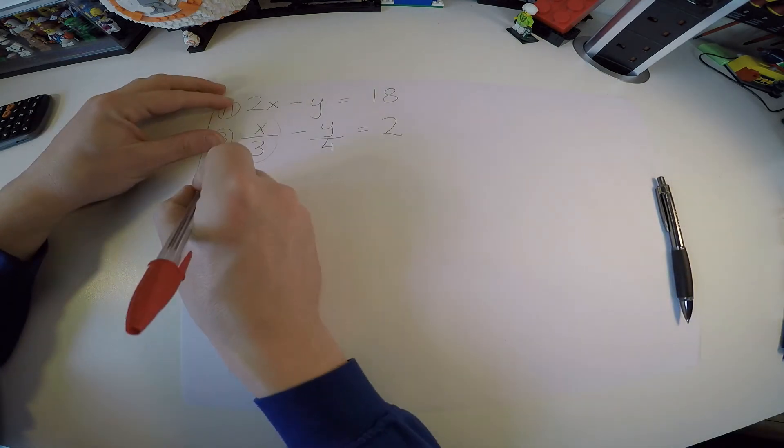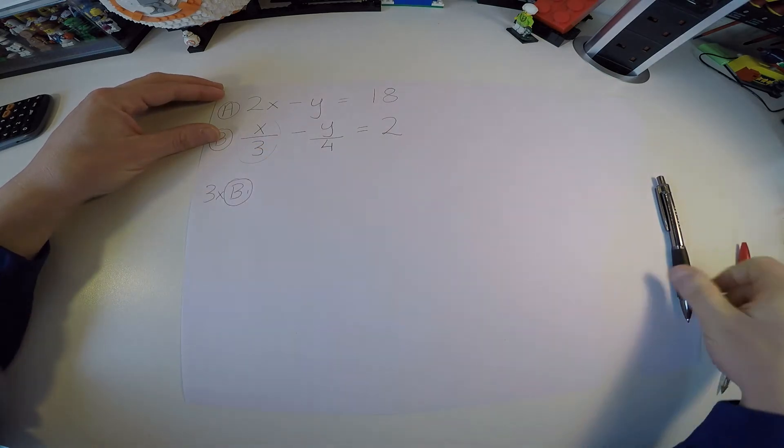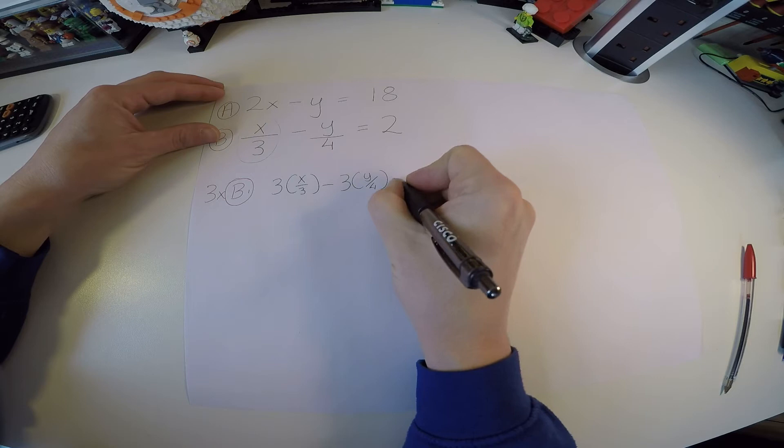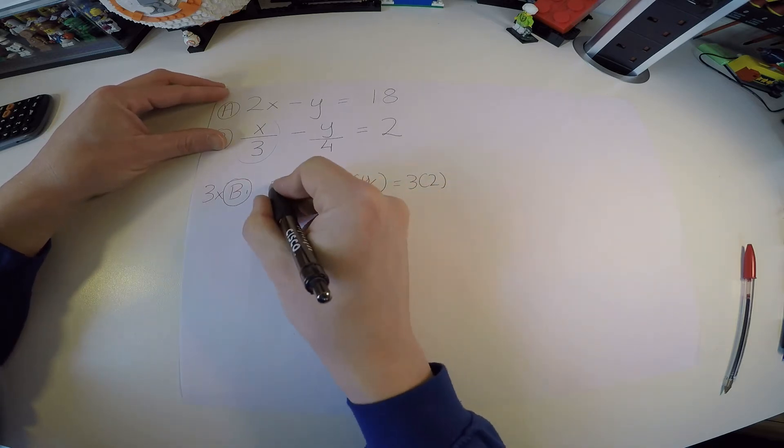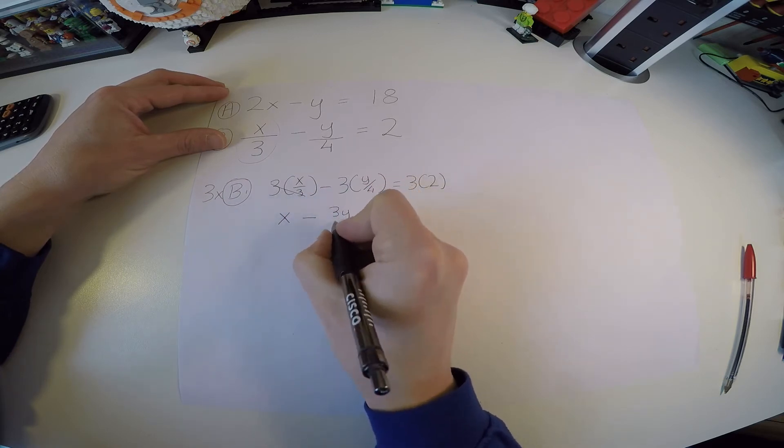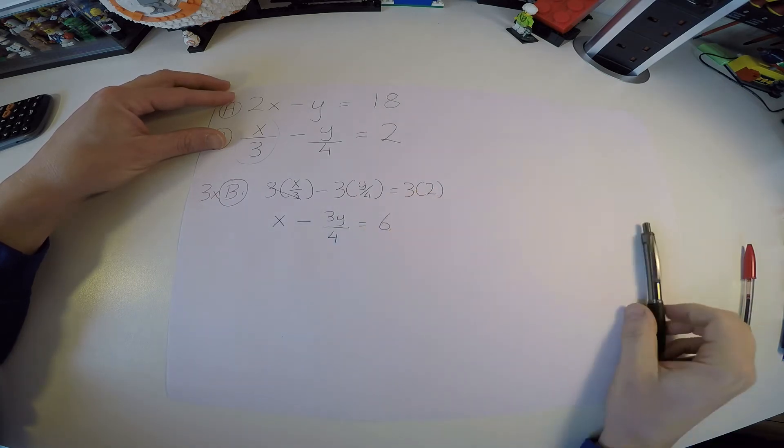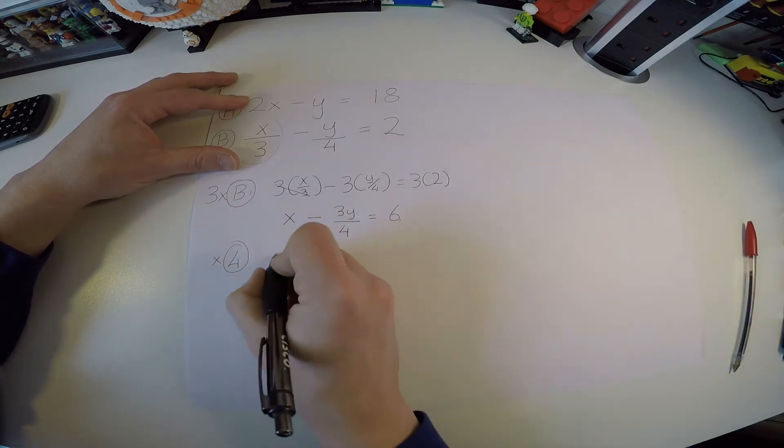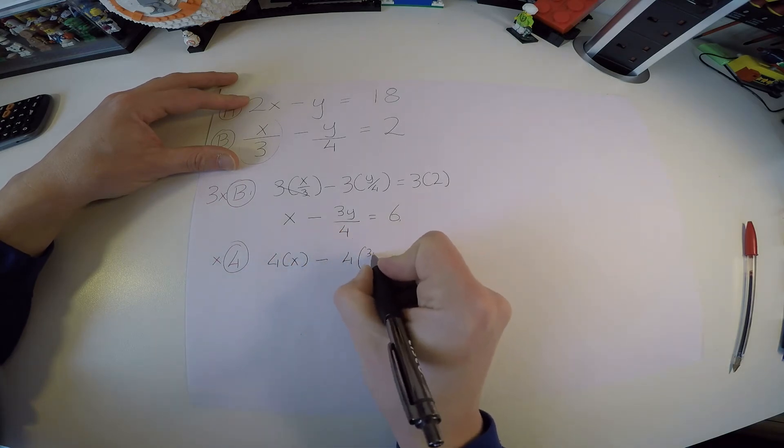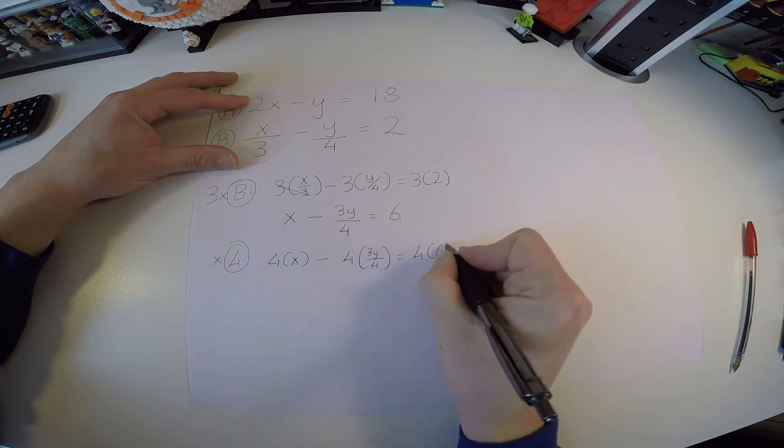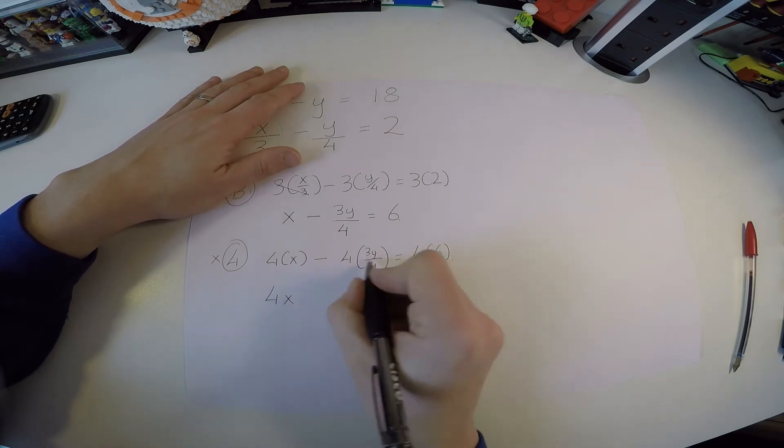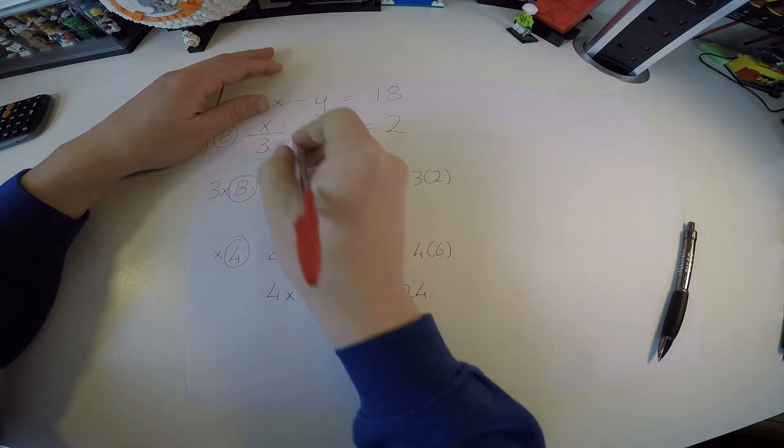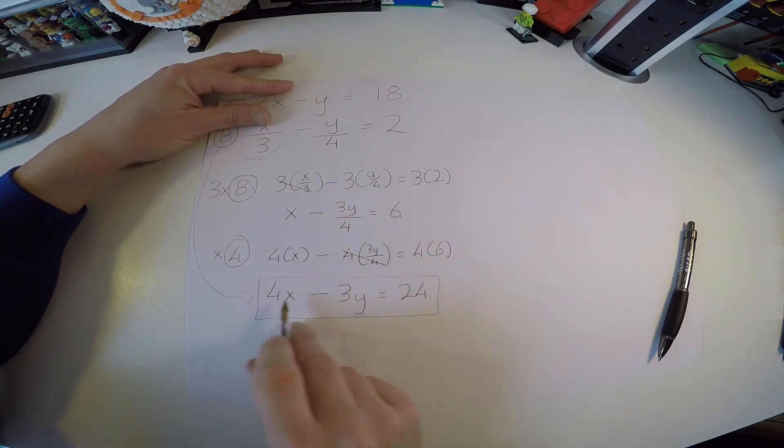I will tell you, I first off want to get rid of this fraction here with the 3 underneath. So what I'm actually going to do first is I'm going to do 3 times b. That's 3 times x over 3 minus 3 times y over 4 equals 3 times 2. 3 times everything. Those 3's go. Now I'm left with x minus, that's 3y on top, but I still have a 4 on the bottom, equals 6. Then I'm going to multiply across by 4 to get rid of this fraction. So that's going to be 4 times x minus 4 times 3y over 4 equals 4 times 6. 4 times x is 4x. These 4's now cancel. Minus 3y. And 4 times 6 is now 24.